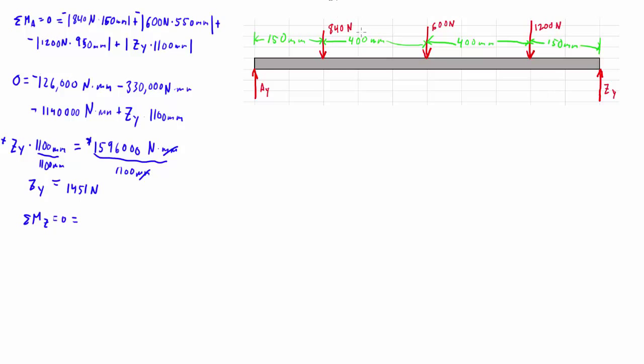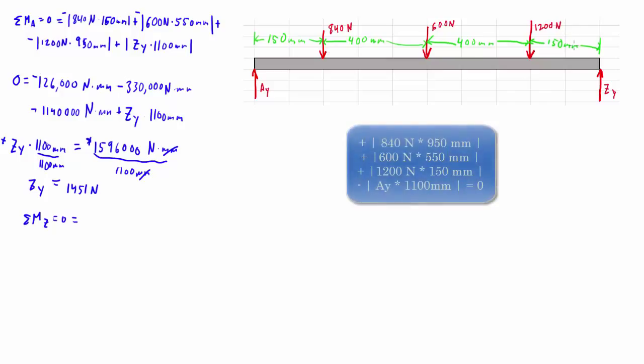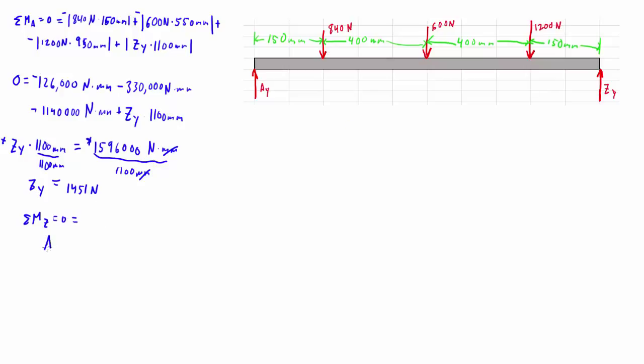Now a similar analysis will be the sum of the moments about Z equals 0, and you've got 840 times 950 millimeters, you've got 600 Newtons times 550 millimeters, you've got 1200 Newtons times 150 millimeters. Then add that to AY times 1100 millimeters, and you'll get the 0, and you'll end up with AY equals 1189 Newtons.